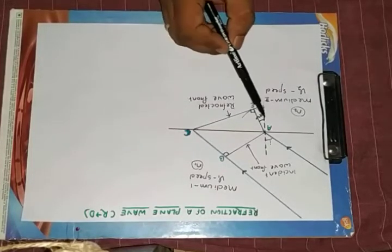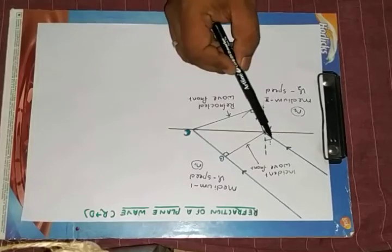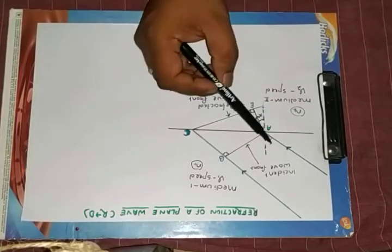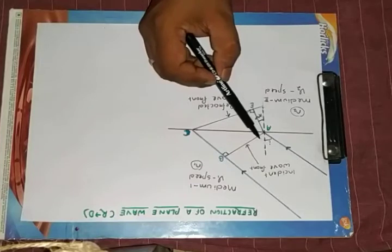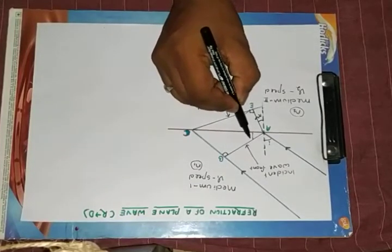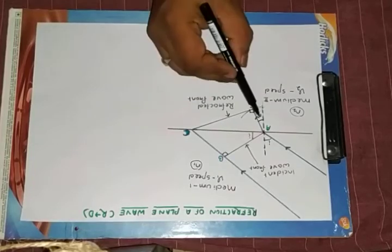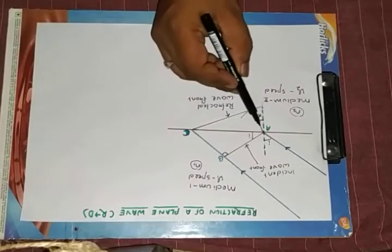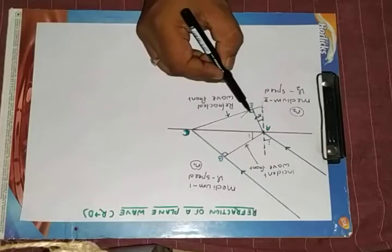bending towards the normal. Let this be the angle of refraction, i is the angle of incidence, this is 90 degrees. Obviously this will be 90 minus i. That means this is i, this is 90, 90 minus r, this